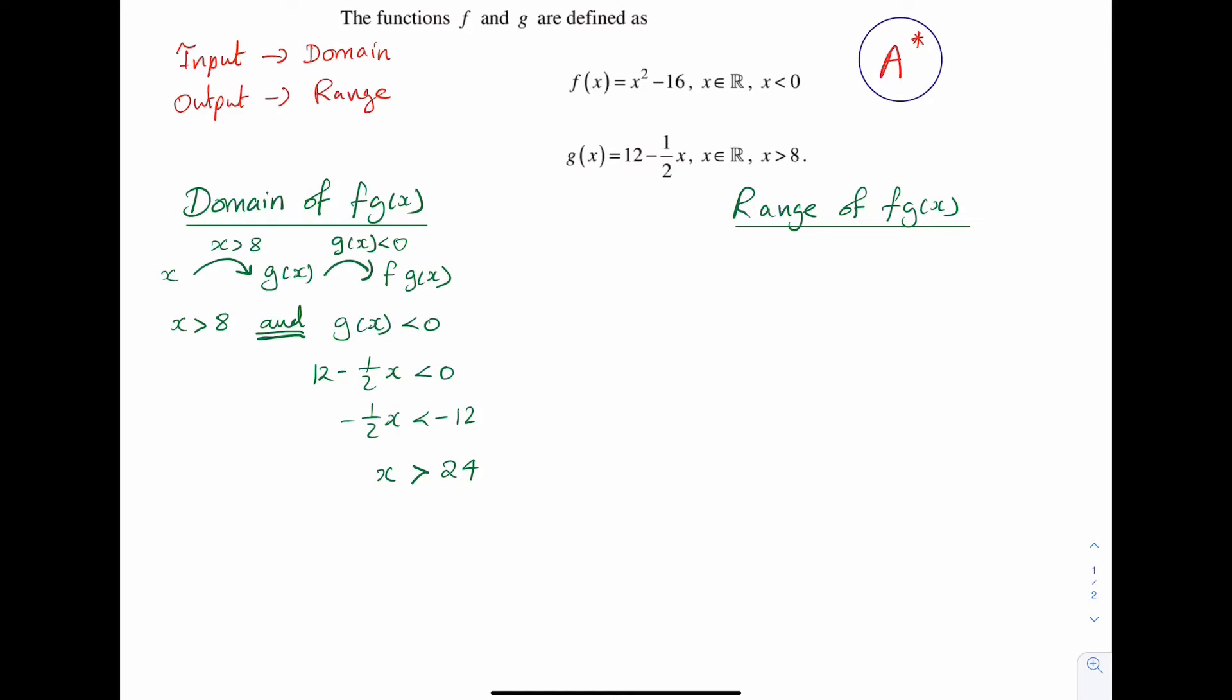So x is greater than 8 and x is greater than 24. The overlap is therefore x is greater than 24. So x is greater than 24 represents the domain of fg(x). You can also include x is an element of the real number set. So I've got the domain of fg(x).